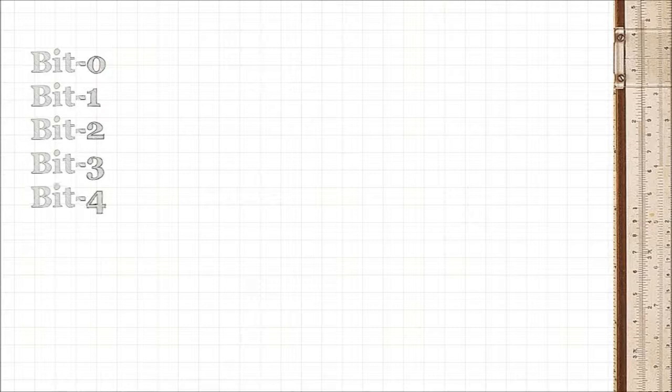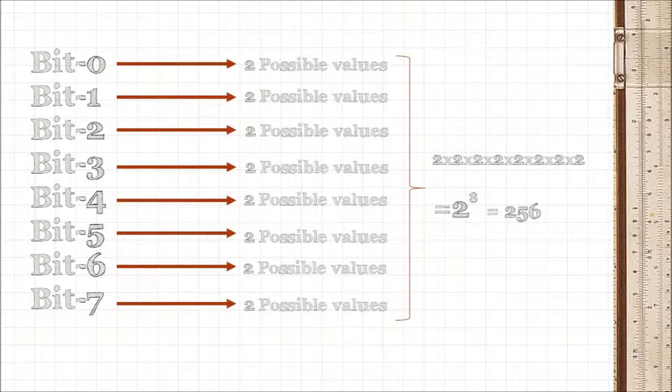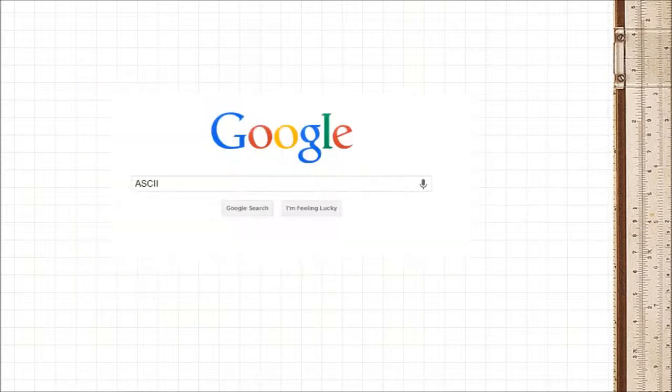Well string 8 bits together and you get a byte. A byte can have 256 possible values, which means a byte can convey information like a single character on a screen. And that is what ASCII is.